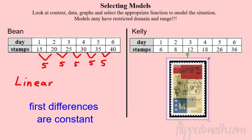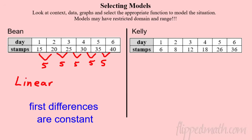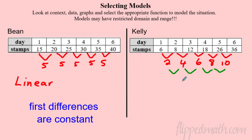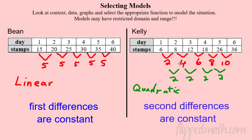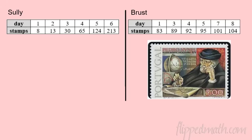Now Mr. Kelly — looking at his first differences: 2 stamps, then 4, then 6, then 10. It's not constant, so let's look at the difference of the differences. The rate of change of the rate of change increases by 2 each time, which is constant. So the second differences are constant, making this a quadratic function.